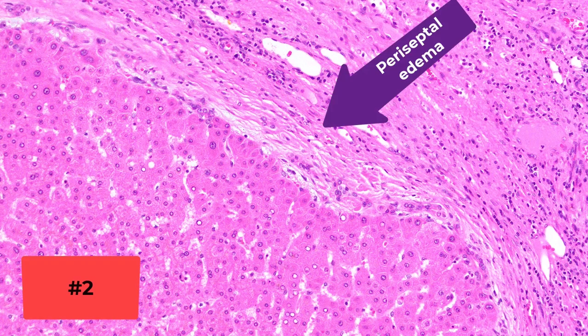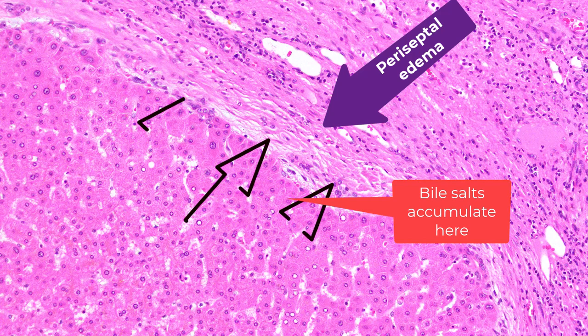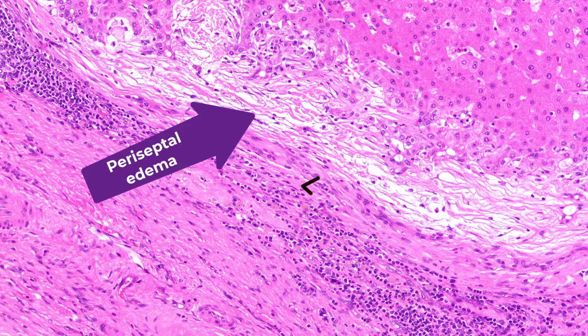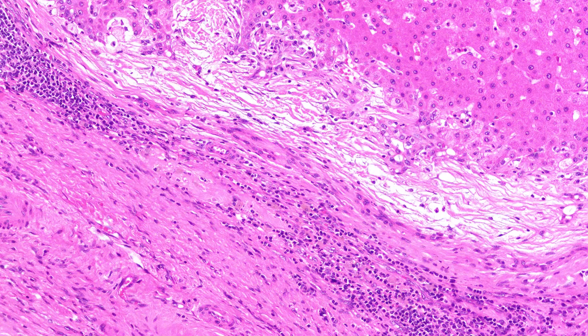Feature number two: note the edema adjacent to these regenerative nodules. This edema is created by the retention of bile salts. Unfortunately, the liver simply can't get rid of these bile salts and they accumulate in the periceptal hepatocytes. So feature number two is this edematous look around the hepatic nodules — a halo-like appearance around the nodules.